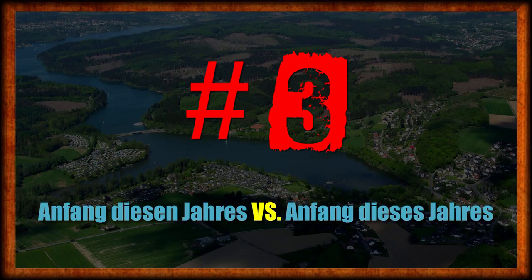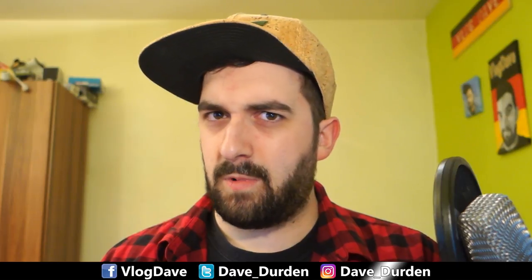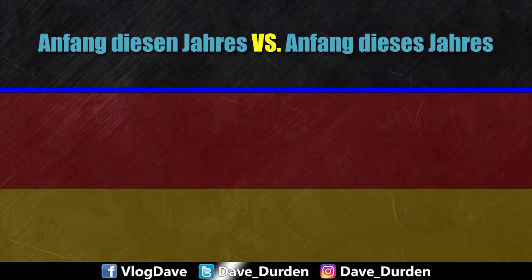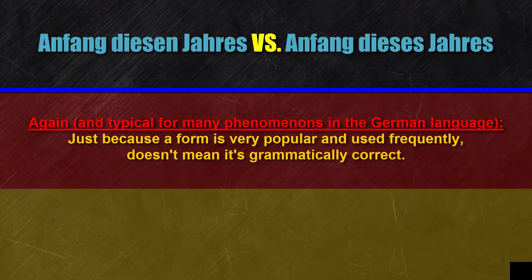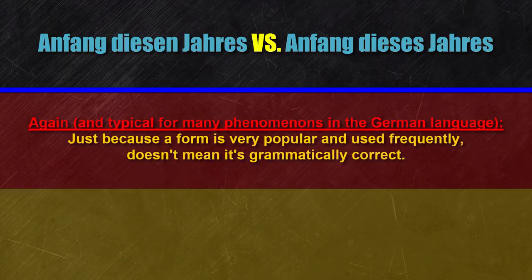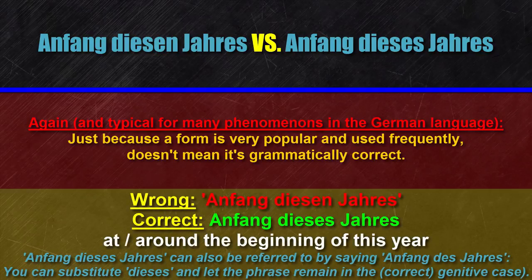Number three: Anfang diesen Jahres versus Anfang dieses Jahres. In a way, this one might be a bit simpler as well, because only one version is correct. Although it's pretty popular to say 'Anfang diesen Jahres' — at or around the beginning of this year — it's wrong grammatically. 'Anfang dieses Jahres' is the correct phrase; in the genitive case it includes the demonstrative pronoun dieses.